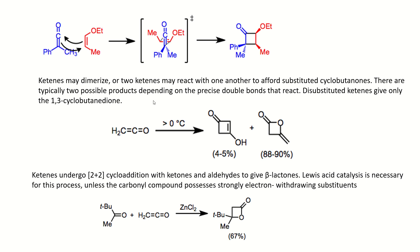In these reactions, ketenes can also dimerize — two ketene molecules react with each other to make a final cyclobutanone. For example, disubstituted ketenes give only 1,3-cyclobutanedione. Two molecules of the ketene react to form a dimer, and the final product will be a 1,3-cyclobutanedione compound. The diol will be only a fraction — less than 5% of the total product — so the major product is the 1,3-cyclobutanedione.